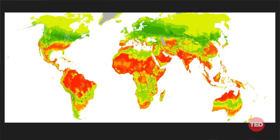I can think of no more profound paradox than this: think about what I showed you — most of the human population lives in places that are basically turning red. The places that are green right now on your map are places that are de-populating, with less and less people as a result of old age, mortality, and low fertility rates. So the rich countries of the world — the United States, Canada, Europe, Russia, Japan — would actually be declining in population were it not for immigration.